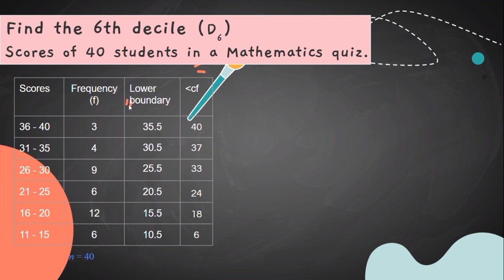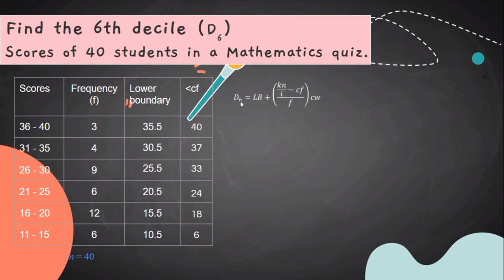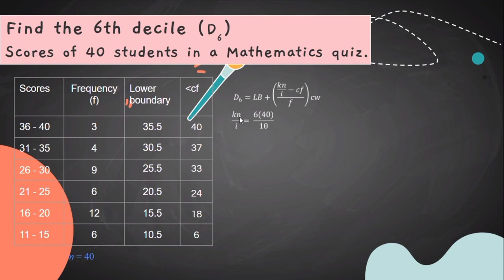In our next example, using the same table as before, find the 6th decile score of 40 students in a mathematics quiz. Our formula is D sub 6, since we are looking for the 6th decile, equals LB plus open parenthesis KN over I minus CF over F close parenthesis CW. To find KN over I: K equals 6, N is 40, and I equals 10 because we are looking for the decile. So 6 times 40 over 10 equals 24.